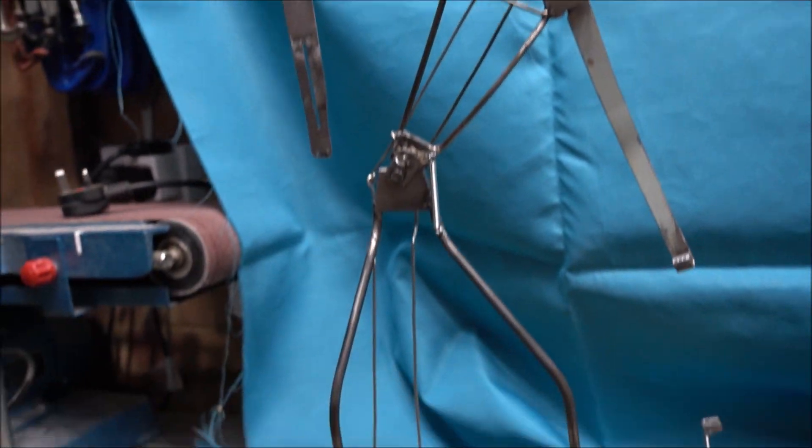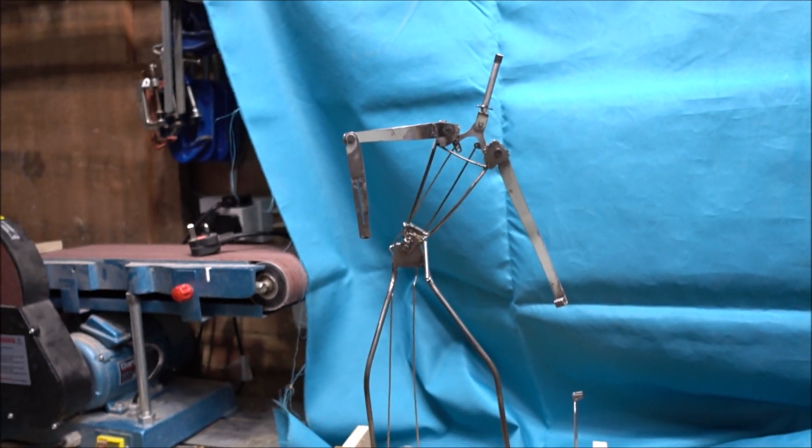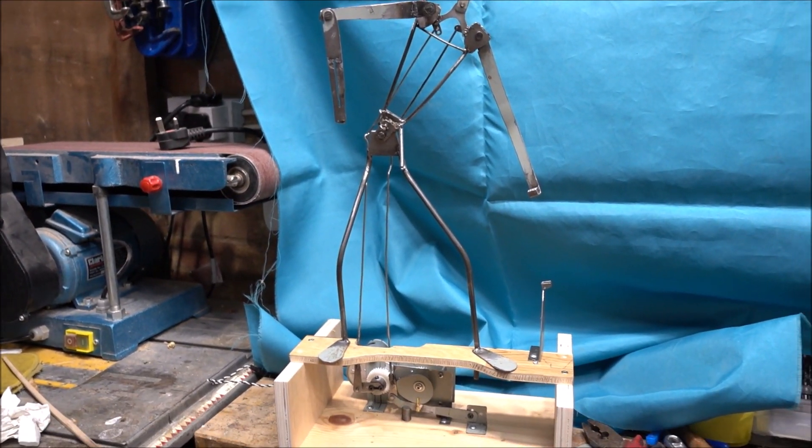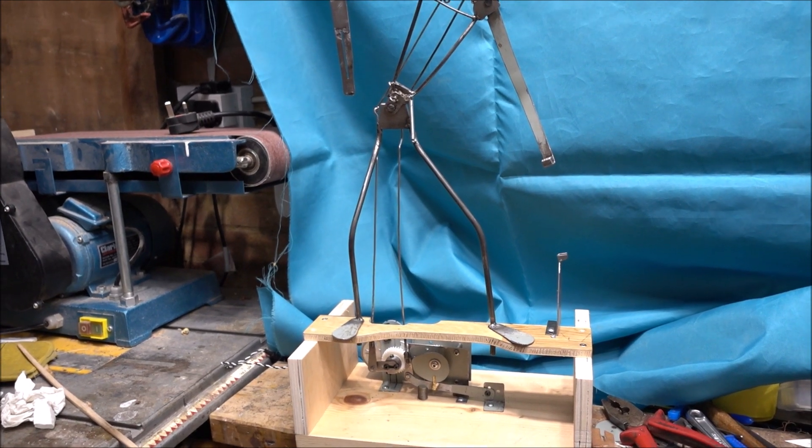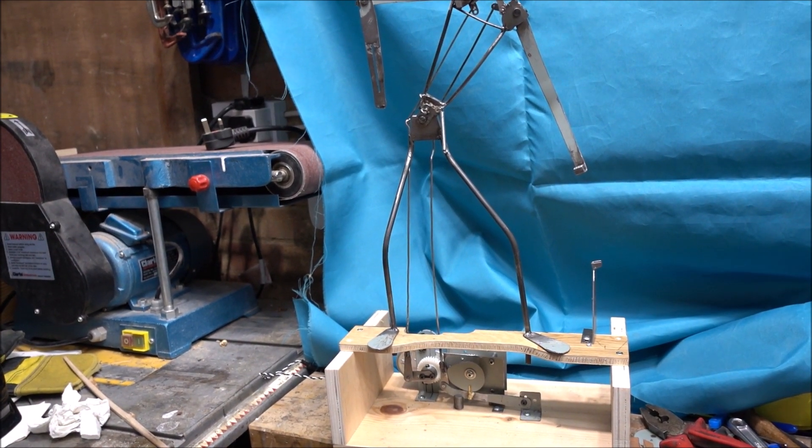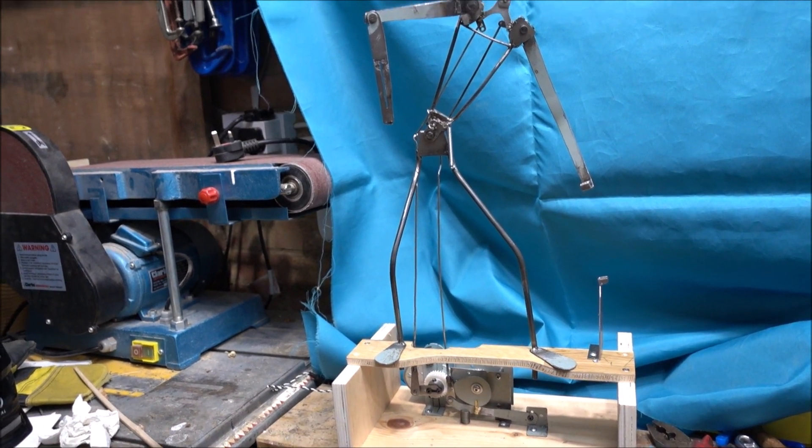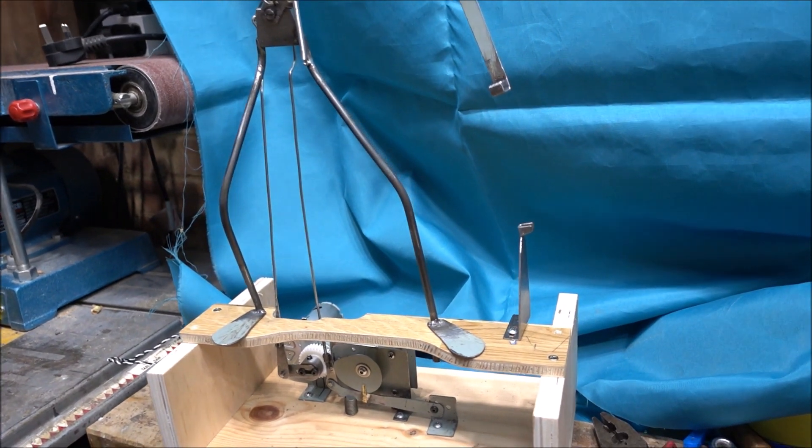The archer automaton is coming on in leaps and bounds. Well, to be fair, he's pretty much standing still, but what I've done is I've built him a plinth, so you've got the motor gearbox below ground level. That won't be seen in the final thing, so it's looking a lot cleaner. He's got feet, which is nice.